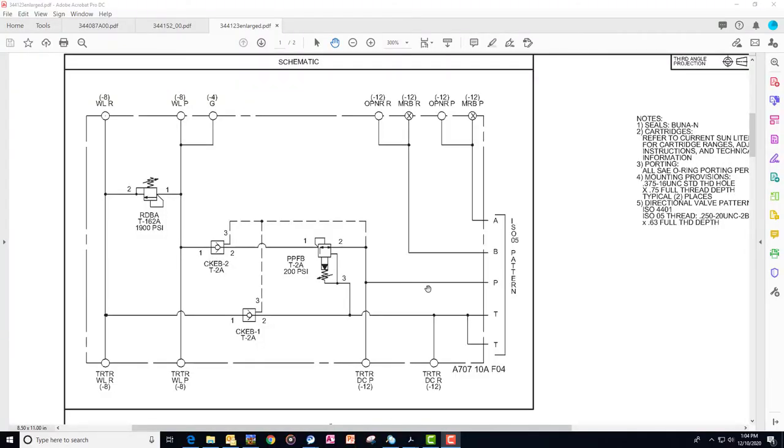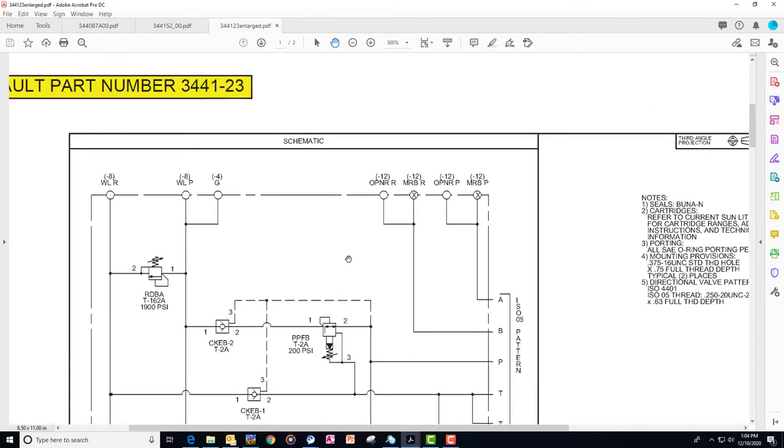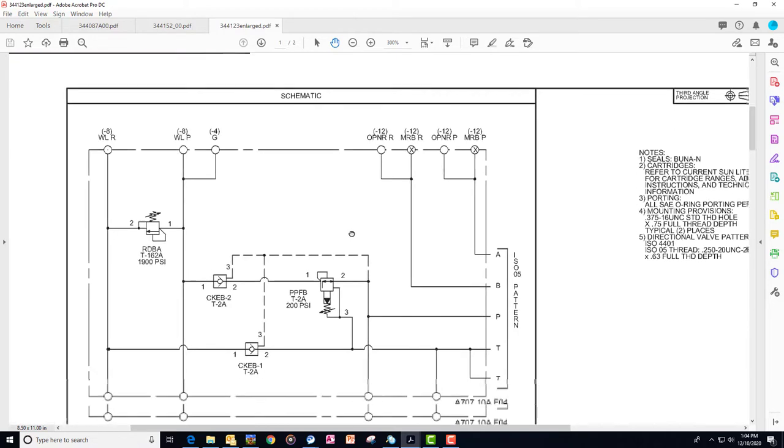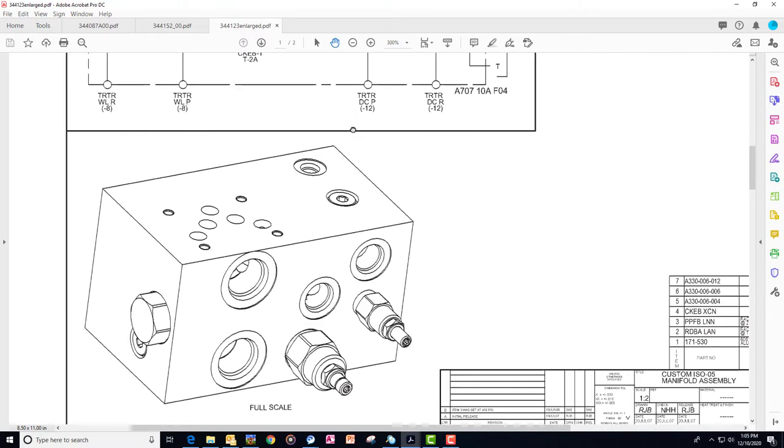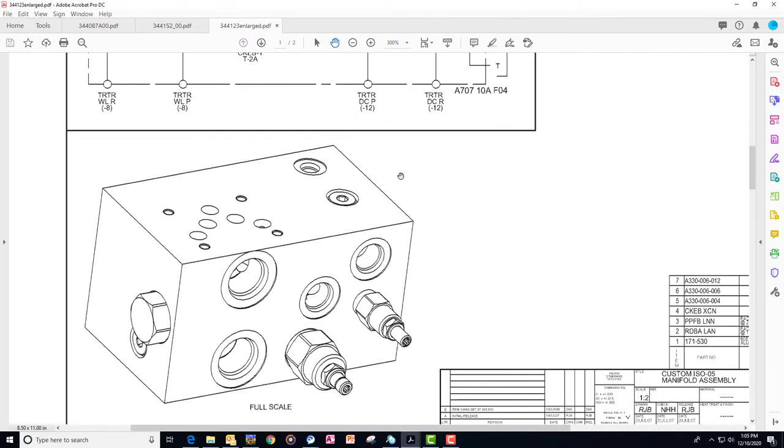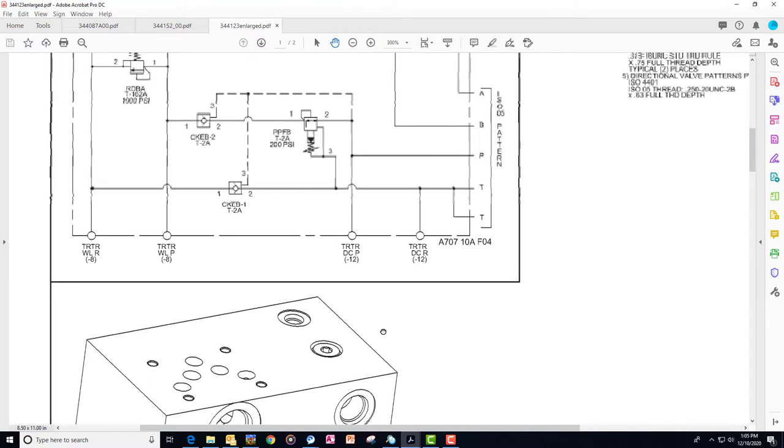Let's review what you've just learned. We are looking at the 3441-23 drawing. That is the block assembly, not including the directional control spool.